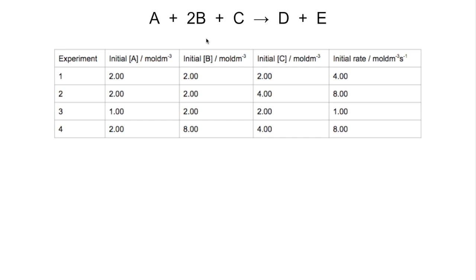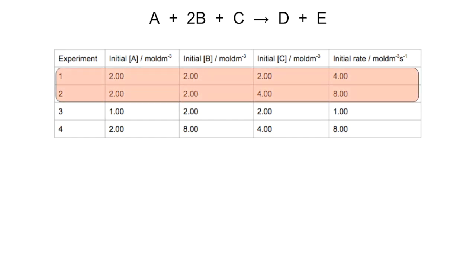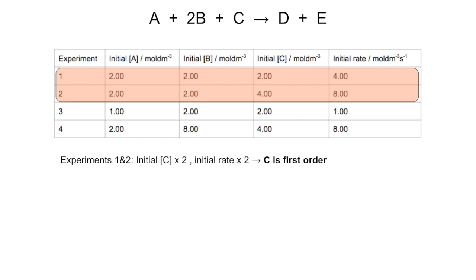The first pair of experiments we're going to look at is 1 and 2. Because the A and B concentrations don't change, all we're changing is C, so we can see its effect on the rate. The concentration of C is doubling and so is the rate, so it's first order.